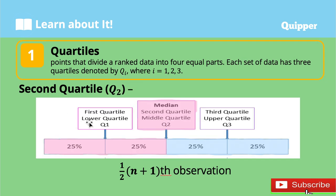Next, we have the second quartile. It is a number such that 50% of the data are below the second quartile, and the other 50% is above it. It is also called the median. If there are n observations in a set of data, the second quartile is the one-half of (n + 1) observation when the data are arranged ascendingly. Note that n here is the number of observations.